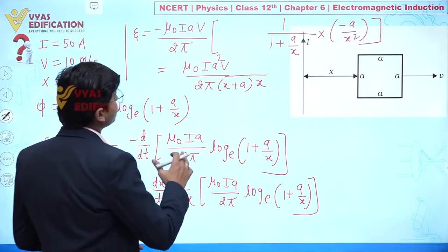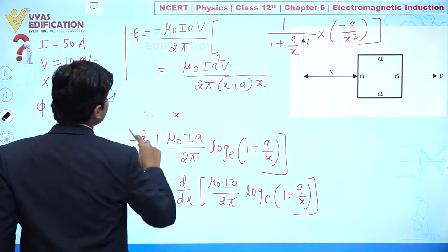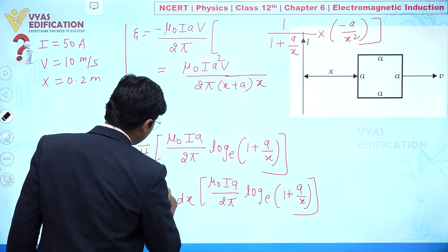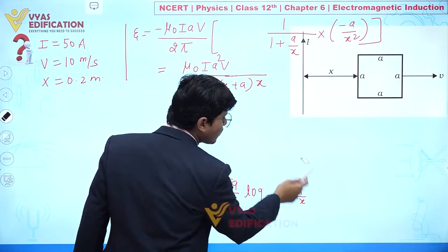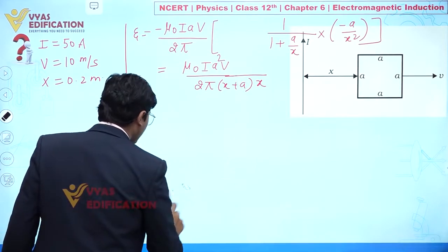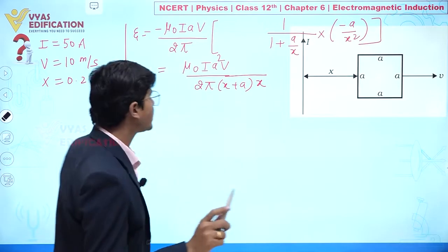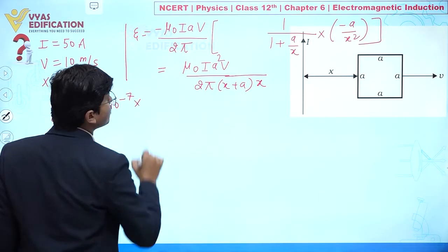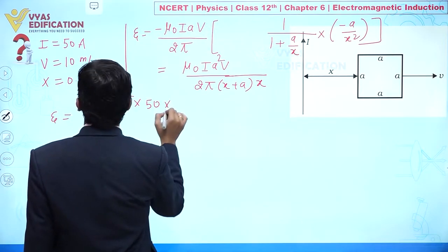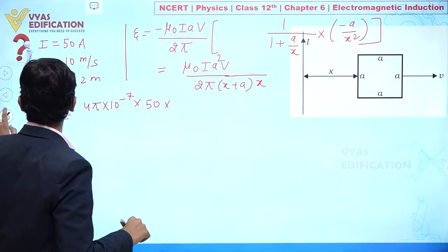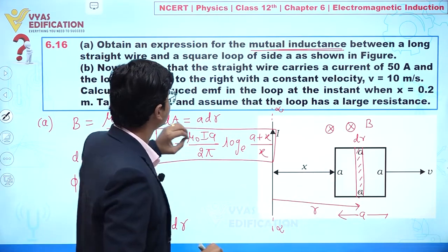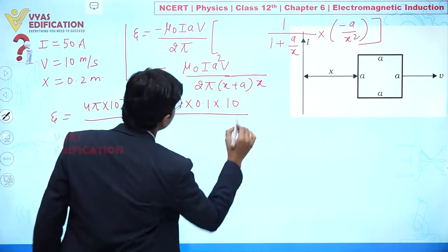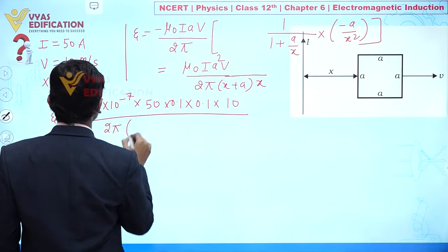Now substituting values: μ₀ = 4π × 10⁻⁷, I = 50 A, a = 0.1 m, v = 10 m/s, x = 0.2 m. So ε = (4π × 10⁻⁷ × 50 × 0.1 × 0.1 × 10) / (2π × 0.2 × 0.3).